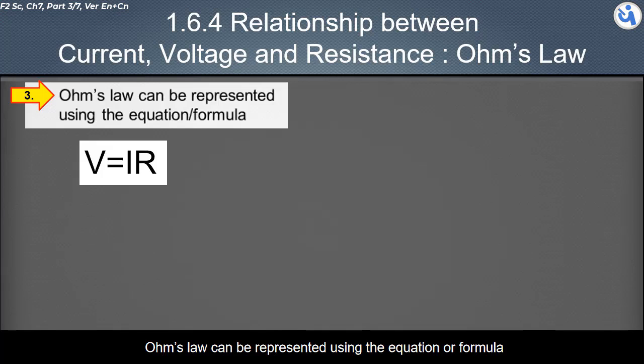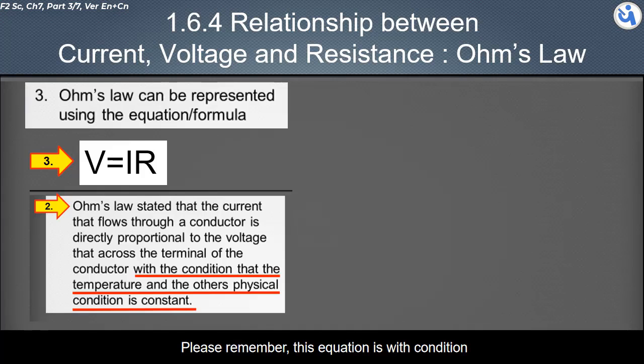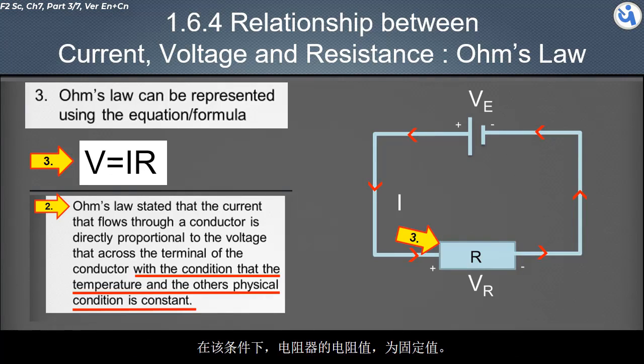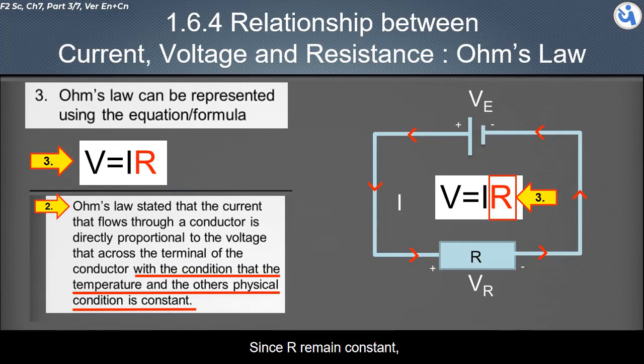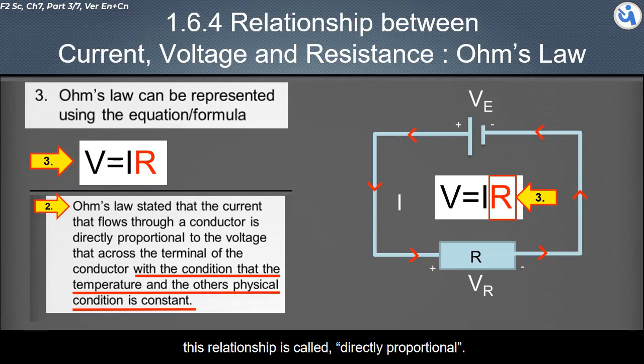Ohm's law can be represented using the equation or formula. It is V equal to I time R. Please remember, this equation is with condition. With the condition, the resistance value of the resistor is a fixed value. Since R remains constant, whenever the voltage across R increases, it will cause the increment of the current. This relationship is called directly proportional.